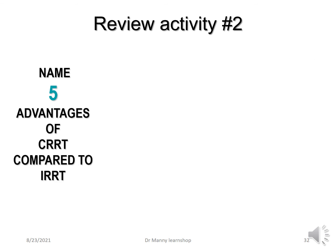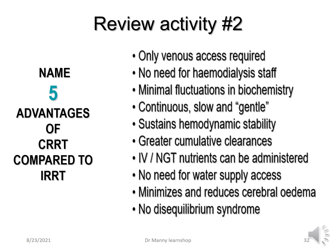What about five advantages of CRRT compared to conventional intermittent renal replacement therapy? The advantages include: you only need venous access; there's no need for hemodialysis staff; there are minimal fluctuations in biochemistry; it's slow and continuous, therefore more gentle; it promotes hemodynamic stability; you get greater accumulated clearances of urea, creatinine, or whatever you want to remove because it's ongoing — not just three or four hours; you can give intravenous and nasogastric nutrients; there's no need for a water supply; and it minimizes cerebral oedema with no associated disequilibrium syndrome.